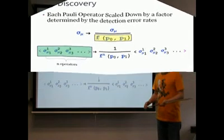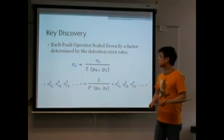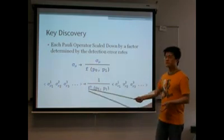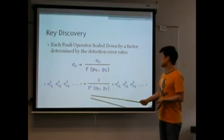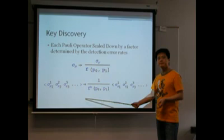Therefore, after we determine the error rates of the detector by calibration, we can correct the error rates of any observable by the relation we just obtained.